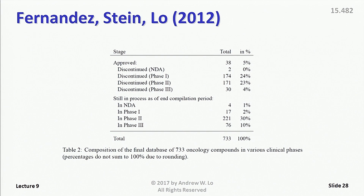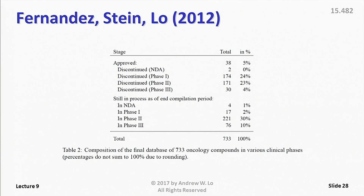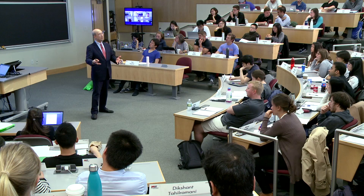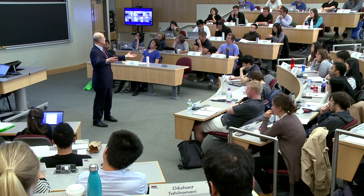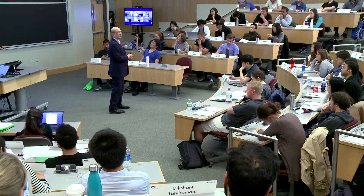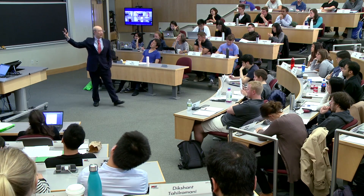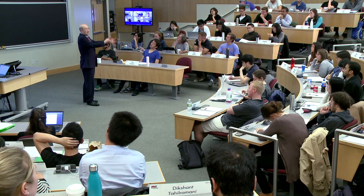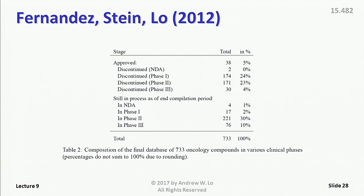To give you a sense of the data we used: we were able to collaborate with Tufts University. They have a dataset of cancer compounds. Our original focus was on cancer for both personal and statistical reasons — personal in the sense that all three co-authors were dealing with family members who had cancer. From a statistical reason, there are lots of different cancer compounds, and cancer itself is not one disease but many different diseases, so we thought we'd get diversification naturally. The Tufts database had 733 anti-cancer compounds, and we used those statistics to calibrate our simulations.